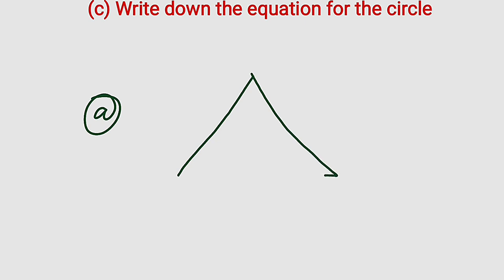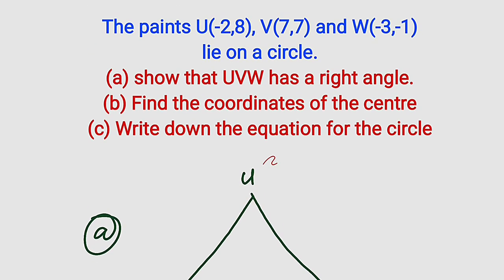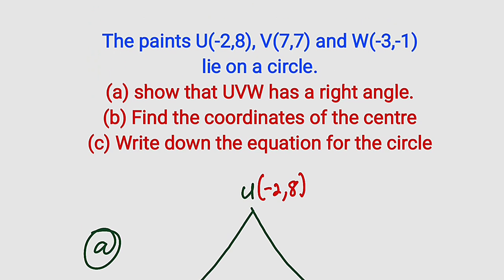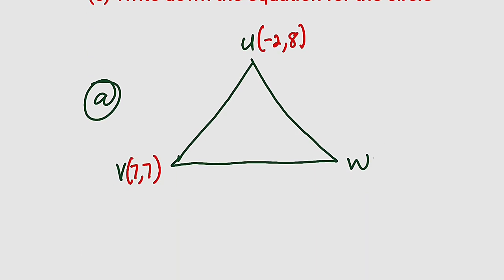I want to sketch any form of triangle, because we don't know which leg is the hypotenuse. So let's assume this is U, V, and W with their coordinates. U is (-2, 8), V is (7, 7), and lastly W is (-3, -1).